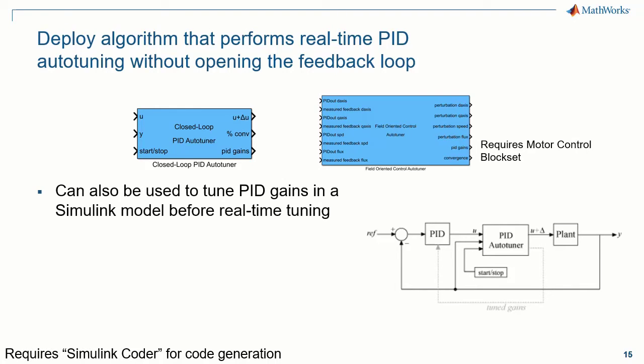If you have a preliminary model in Simulink, you can use these blocks in simulation to get an initial set of PID gains. Then you can use these gains on the embedded system, deploy this block onto that system, and fine-tune the gains for your physical system. Let's look at an example of this block working in simulation and in real time.